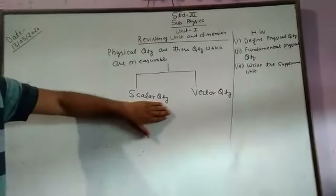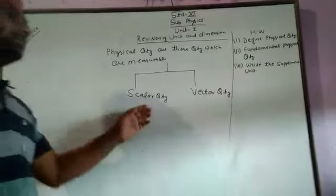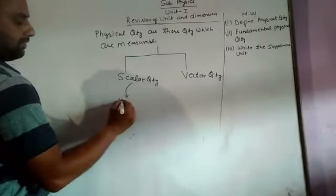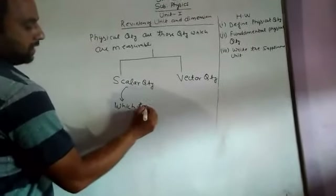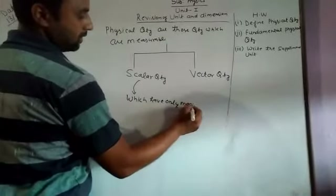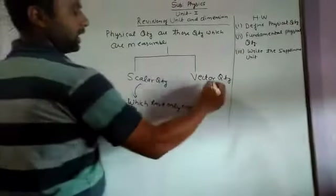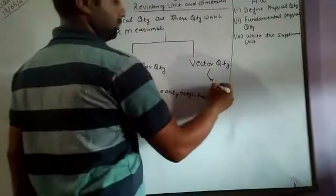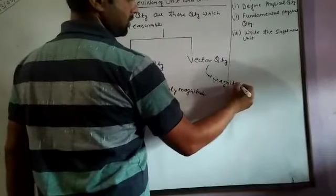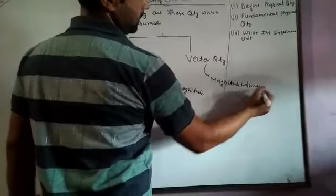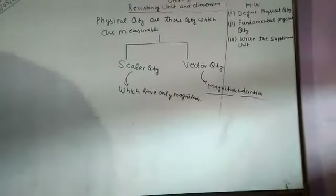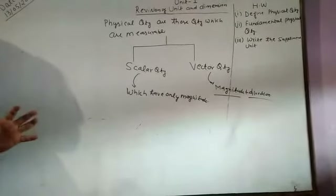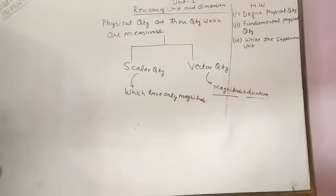Now we are defining the scalar quantity. Scalar quantities are those physical quantities which have only magnitude. Vector quantities are those quantities which have magnitude and direction.